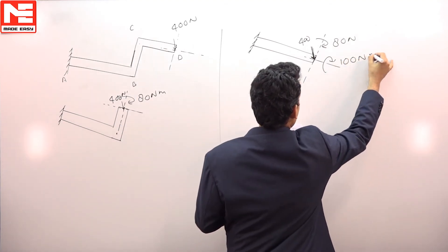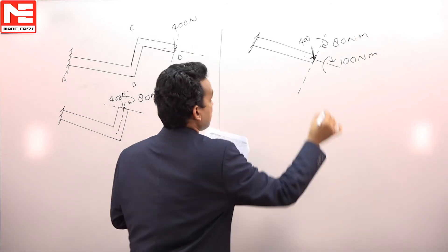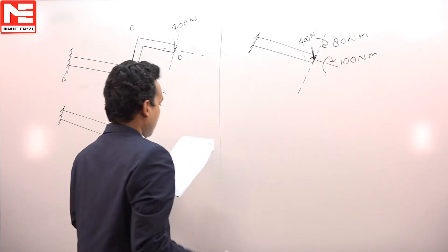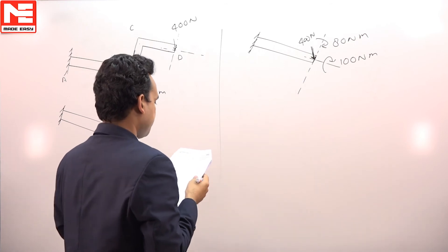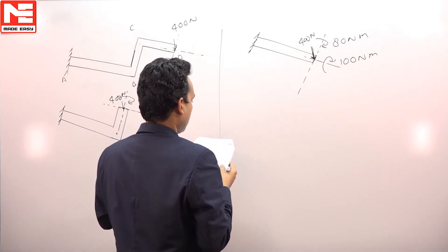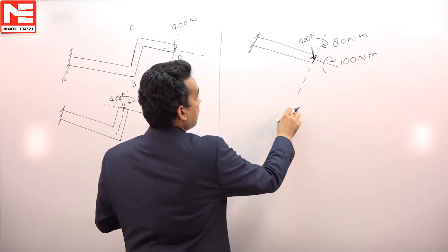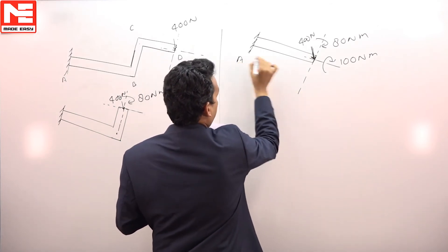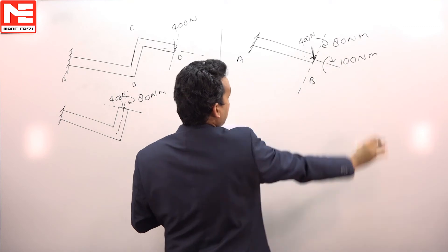This is again Newton meter. Now according to the question, you have to find shear force, then bending moment, and torque at the fixed support. Now for this member AB, this 80 Newton meter is the moment.